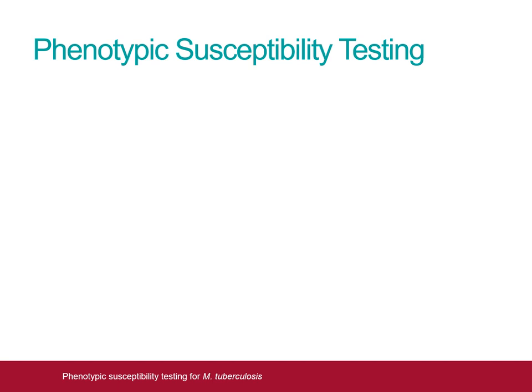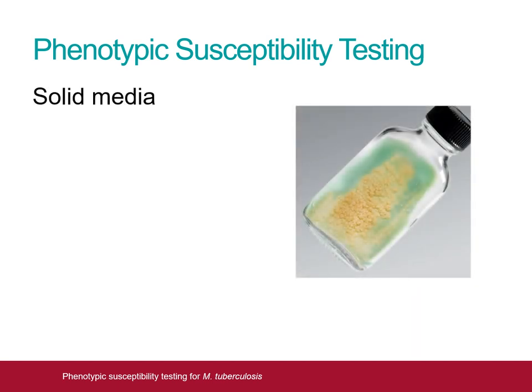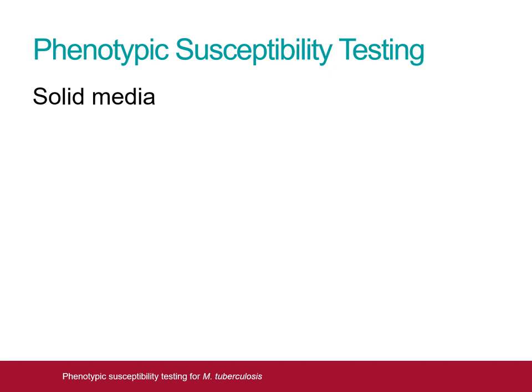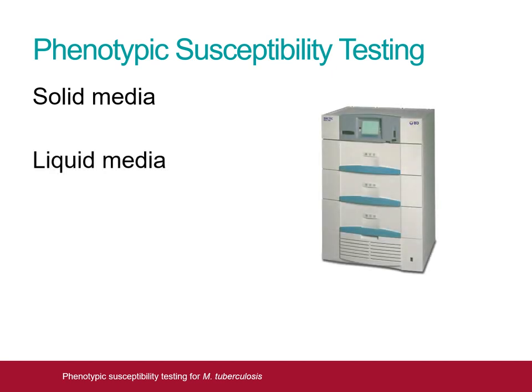Phenotypic susceptibility testing for mycobacteria can be performed using several different techniques. Firstly, the organism can be grown in solid media containing varying concentrations of an antituberculous agent. The growth of patient samples is compared to that of a susceptible control strain, with growth at a significantly higher concentration than the control strain indicating drug resistance. Secondly, the organism can be grown in liquid media, utilising the MGIT system. Patient samples are incubated in the presence and absence of antituberculous agents, with a significantly decreased growth rate in the presence of an agent indicating drug sensitivity.